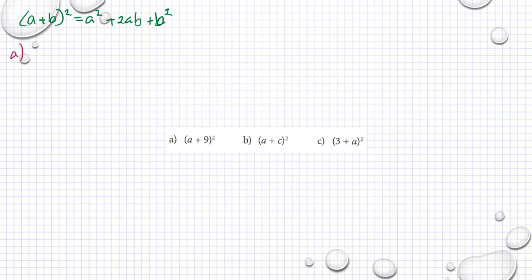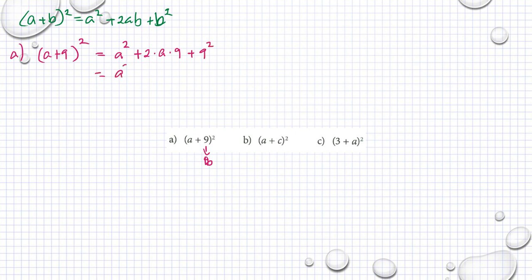Vårt A är ju A plus nio. Så A plus nio i parentes kvadrat. Vårt A är A men vårt B är nio. Det är vårt B. Okej, så har vi A upphöjt till 2, plus 2 multiplicerat med A, multiplicerat med B som är nio, plus nio upphöjt till 2. Så har vi A upphöjt till 2, plus 18A, plus 81.